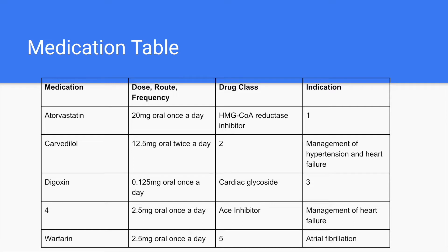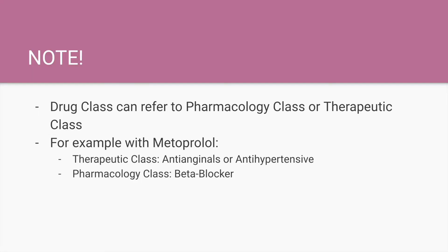Here's the medication table that you would see on a question. There are certain blanks, and they will give you options to fill in the blanks. One thing to note is that the drug class can refer to the pharmacology class or the therapeutic class. For example, with metoprolol, the therapeutic class is anti-anginal or anti-hypertensive, and the pharmacology class is a beta blocker.